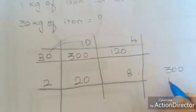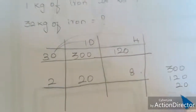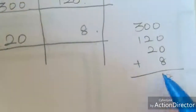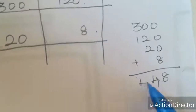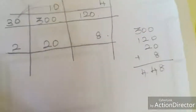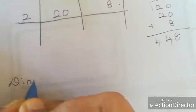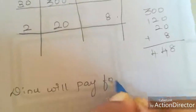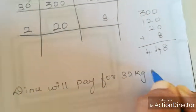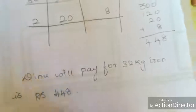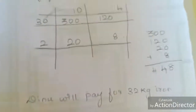Then you have to add all the answers: 300, 120, 20, and 8. Adding: 8 in the ones place, 0 plus 2 is 2, 2 plus 2 is 4, then 3 plus 1 is 4. So how much money will Dinu pay for 32 kg? Dinu will pay Rs. 448 for 32 kg of iron.